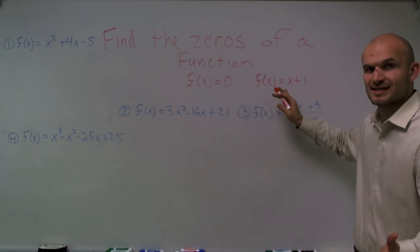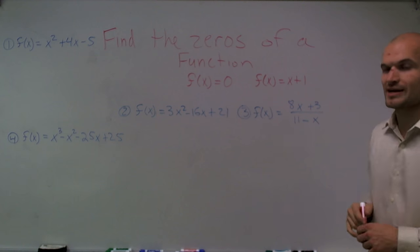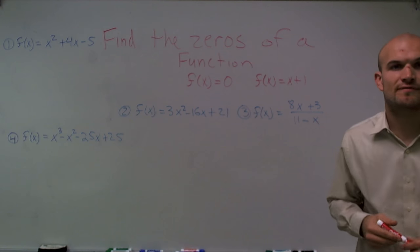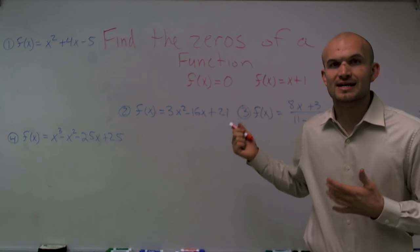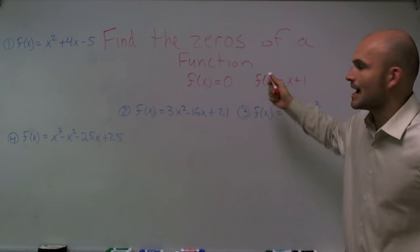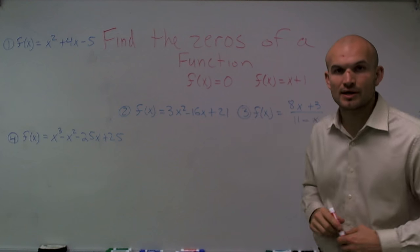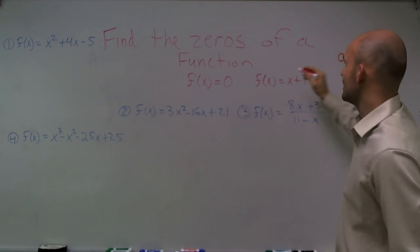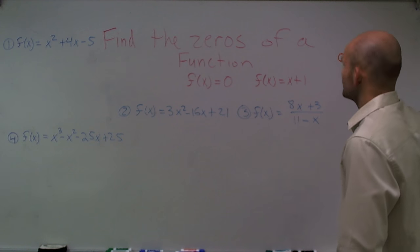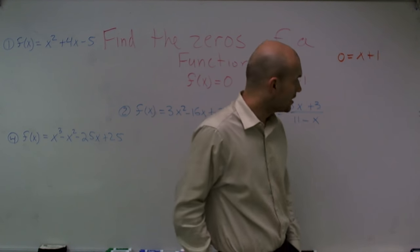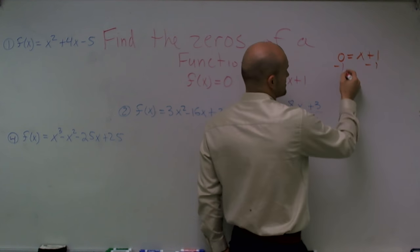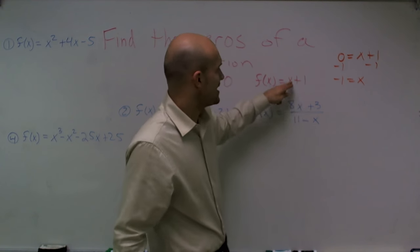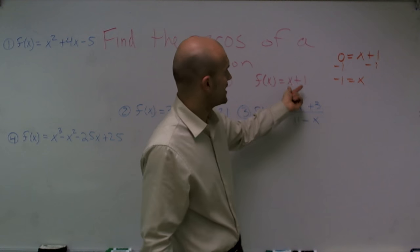Let's look at something very basic. If I gave you a function f of x equals x plus 1 and said find the zeros, that means I want to find the x values that I plug in to get my output equal to zero. So I write 0 equals x plus 1. To find x, I subtract 1 on both sides and get negative 1 equals x. So whenever I plug in negative 1, my output is zero — negative 1 plus 1 equals 0.